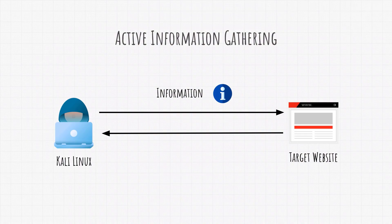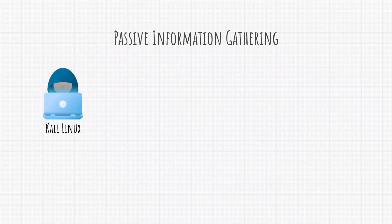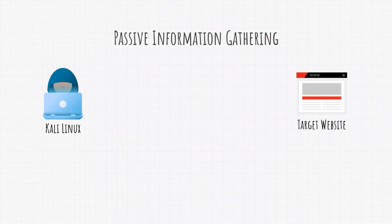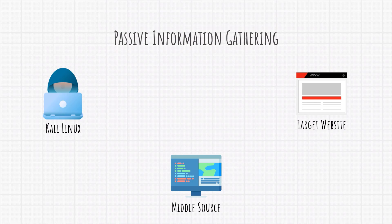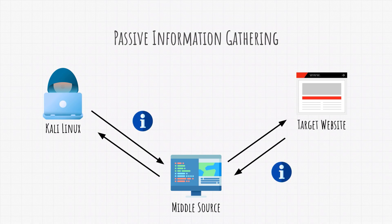On the other hand, we have passive information gathering. It is similar — we have our Kali Linux machine and our target — but we also have an intermediate system, or what I like to call a middle source. This middle source could be anything: a search engine, a website, or even a person. What matters is that the information we get is going through that middle source. For example, if we google a target to find pages containing information about it, that is passive information gathering.